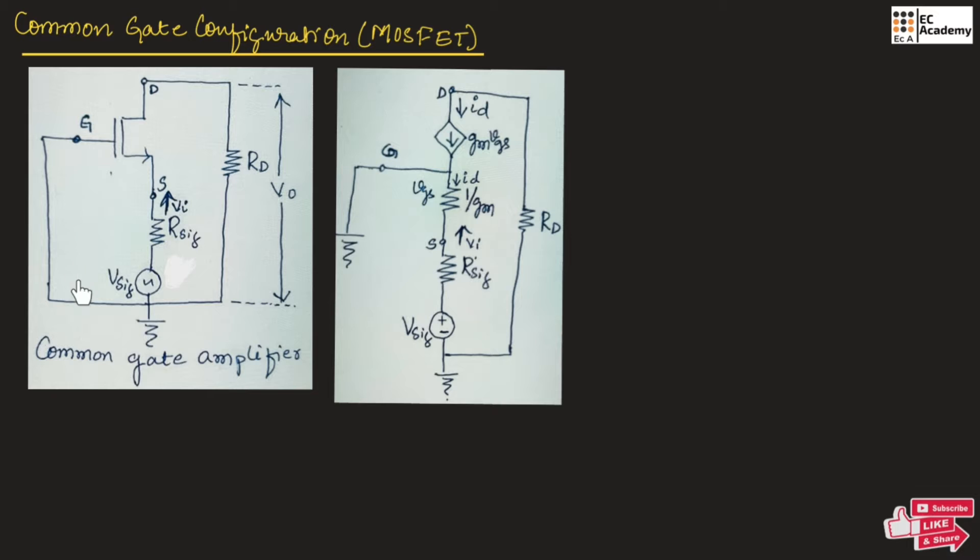This is the common gate amplifier circuit using MOSFET. In common gate configuration, the input signal is applied to the source terminal and the output is sampled across the drain terminal.